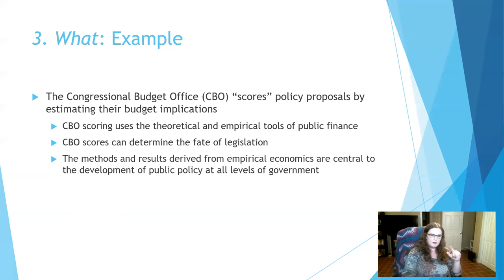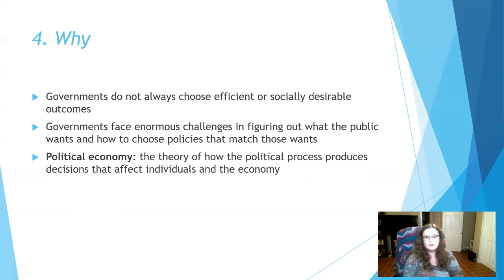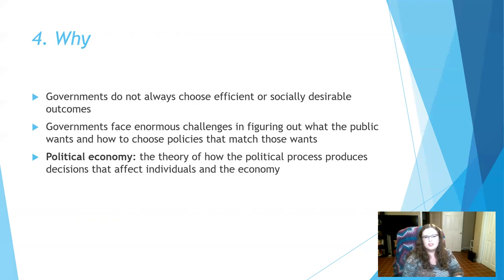We have the when, the how, and the what — now let's do the why. Governments do not always choose the efficient or socially desirable outcome. They might not want to be at the efficient level and might choose something completely different. Governments face enormous challenges figuring out what the public wants — using voting systems, marketing campaigns, surveys like the American Community Survey, and the census. Choosing among policies on how to make people happy is very, very difficult, which is why we have the study of economics called political economy.